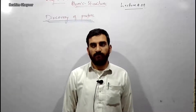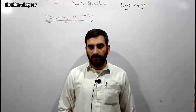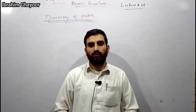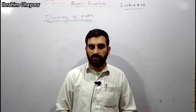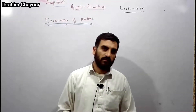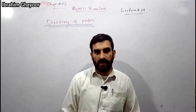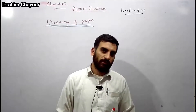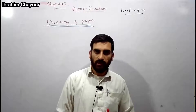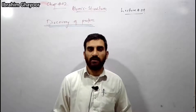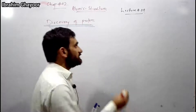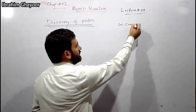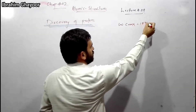Bismillah ar-Rahman ar-Rahim. This is lecture number 4: Atomic Structure, chapters one and two. This is the discovery of cathode rays. This is William Crookes, 1870s — William Crookes discovered cathode rays in the 1870s.